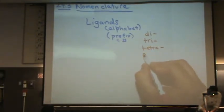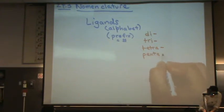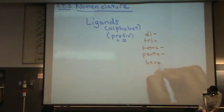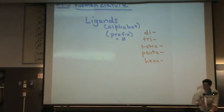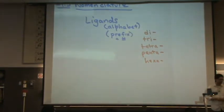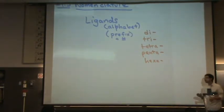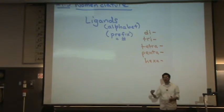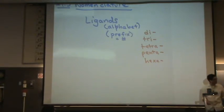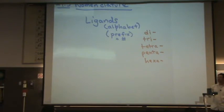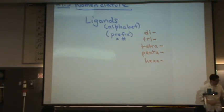If there's five, you put penta. And if there's six, you put hexa. You're really not going to go above six, not in our class. So you put those prefixes to name the number of ligands, because they're somewhat covalent bonds — and whenever we're talking about covalent, you must have a prefix.